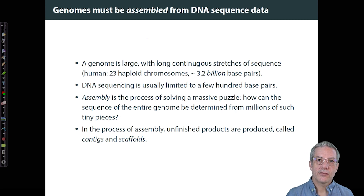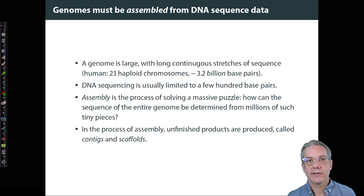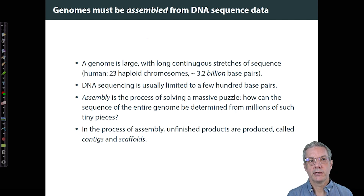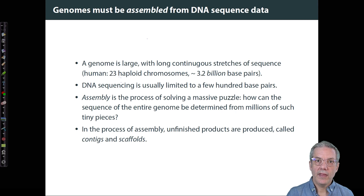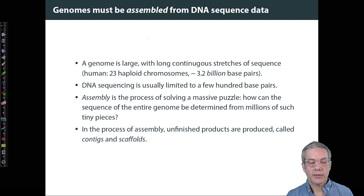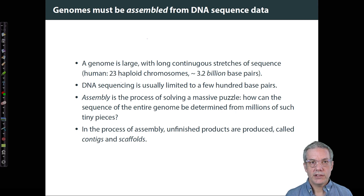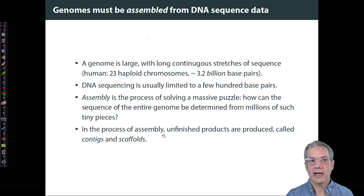In either case, assembly is the process of solving this massive puzzle — how can we infer the sequence of each chromosome from millions of tiny pieces? While the problem is being solved, it's like a partial solution to a jigsaw puzzle. If you put a few pieces together, you have something composed of two or three or ten pieces, but that's not the solution to the puzzle. Those unfinished products during the process of genome assembly are called contigs and scaffolds.